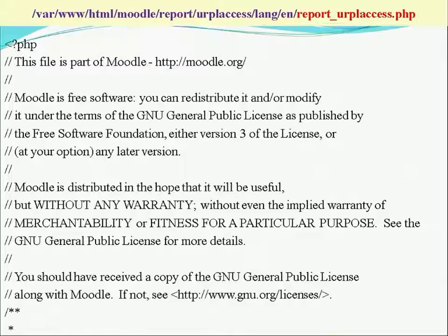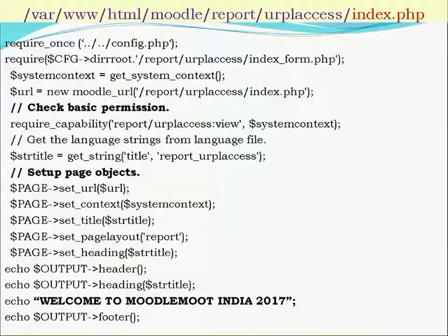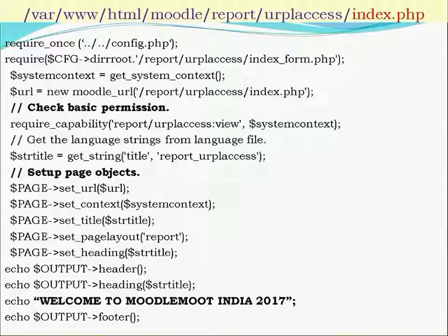Once all these files are generated, we create the user interface using index.php, using the Form API and Page API. The folder structure is: DB (containing access.php and install.xml), a language folder with an EN subfolder containing the string file used in the program, and four root-level files: version.php, settings.php, index_form.php, and index.php. Index.php is required to design our screen as per our requirement.